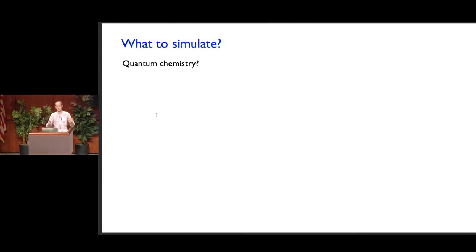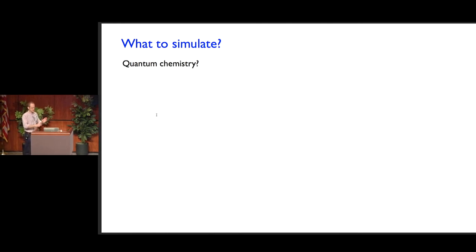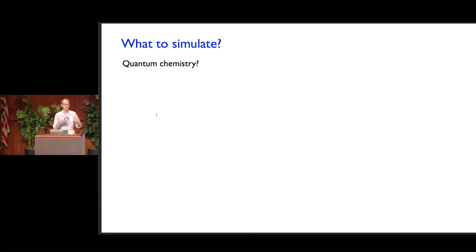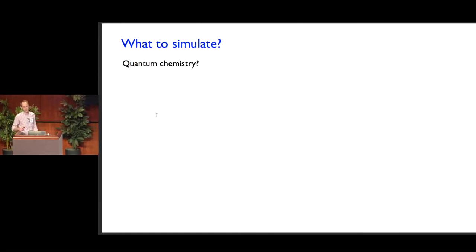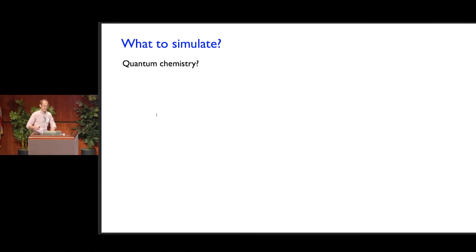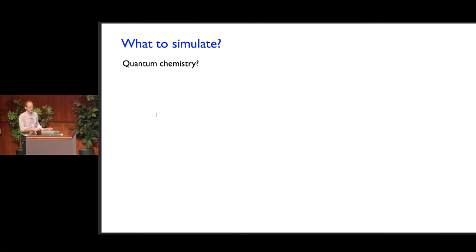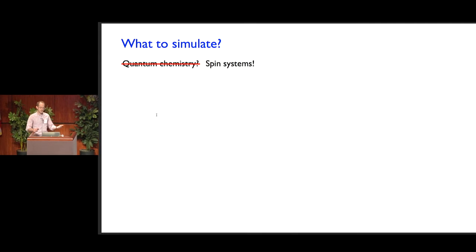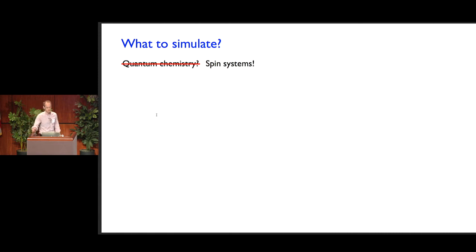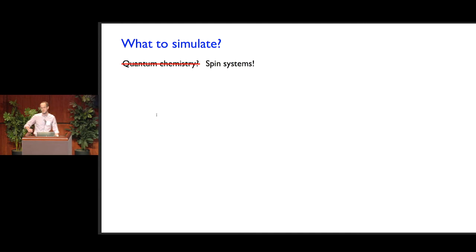The most attention in the literature on applying quantum simulation algorithms to explicit physical systems has been given to the problem of simulating quantum chemistry — for good reason, because there are lots of important problems in quantum chemistry we'd like to solve. But for the purpose of this talk, I want to focus on another kind of system: simple spin systems. I think simulations of these systems are more straightforward with less overhead in constructing simulations. And there are actually interesting problems from condensed matter physics we could approach, where we'll have less overhead and correspondingly be able to perform simulations using fewer gates.